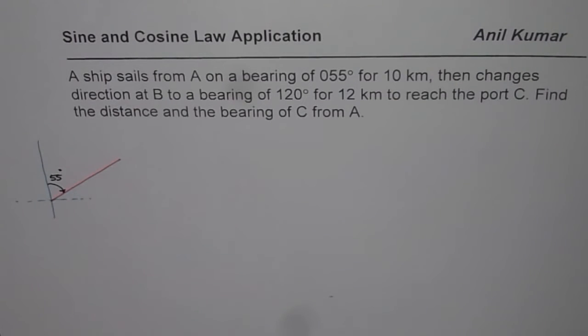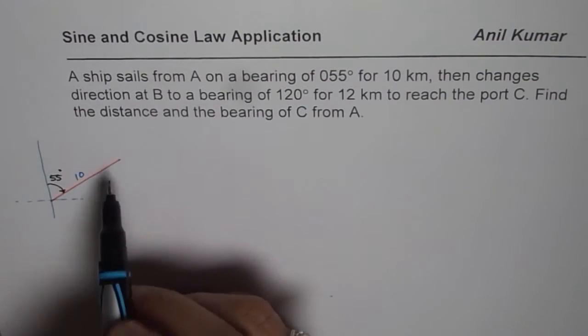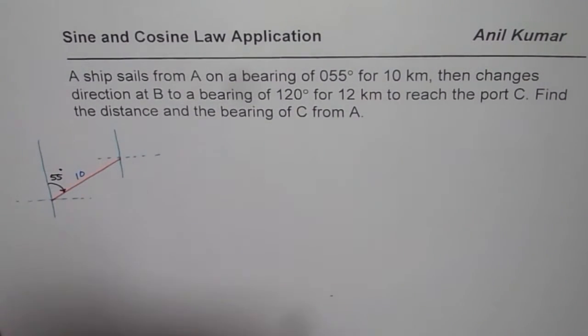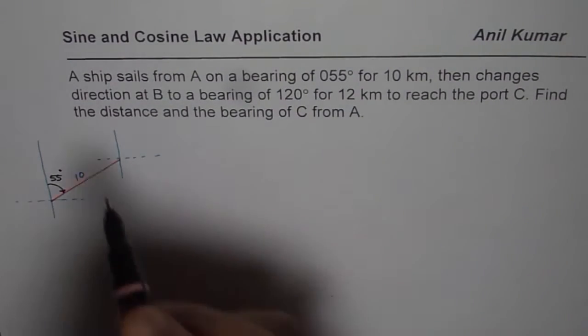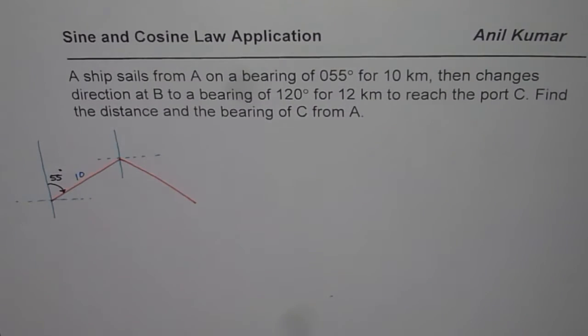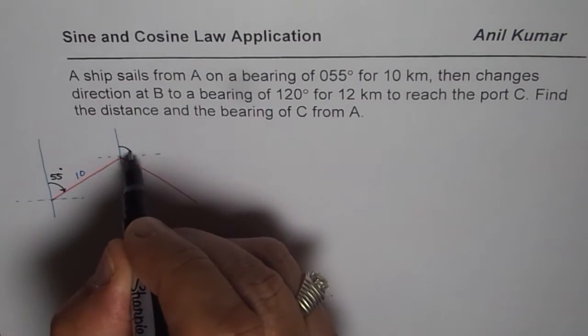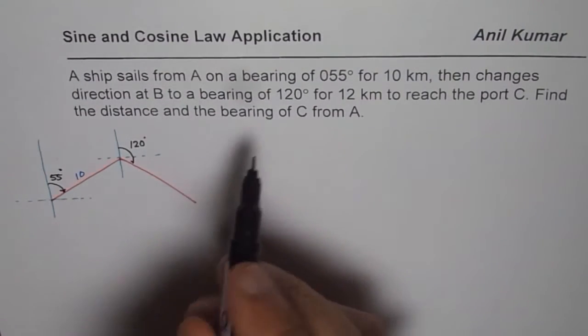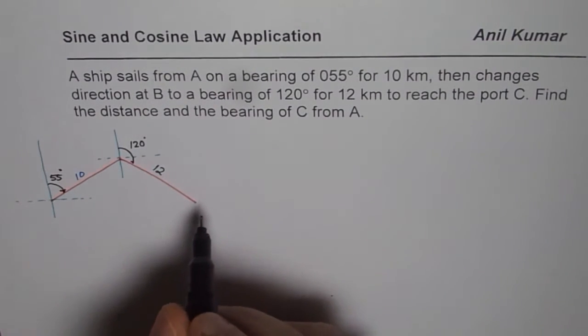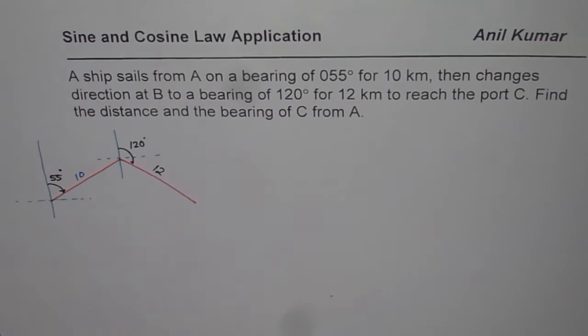Let's say that this distance is 10 kilometers. After 10 kilometers, the direction changes at B. So this point is A. At this point, the direction changes. Let's see what is the change in direction. At a bearing of 120, 120 will mean more than 90, 30 degrees more. So this becomes 120 degrees. This angle from here will be 120 degrees, and the ship moves in this direction for 12 kilometers. So this is 12 kilometers and reaches the point C.